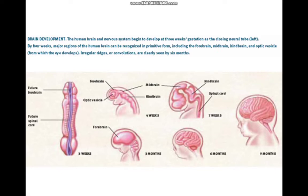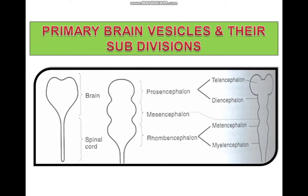The brain and the spinal cord are wrapped in three meninges — three membranes made of dense irregular connective tissue covering the brain and the spinal cord. These membranes are the dura mater, the arachnoid mater, and the pia mater. The dura mater is the outermost, the arachnoid mater is the middle one, and the pia mater immediately surrounds the brain and spinal cord. There is a subarachnoid space between the pia mater and the arachnoid mater, and a subdural space between the arachnoid and the dura.